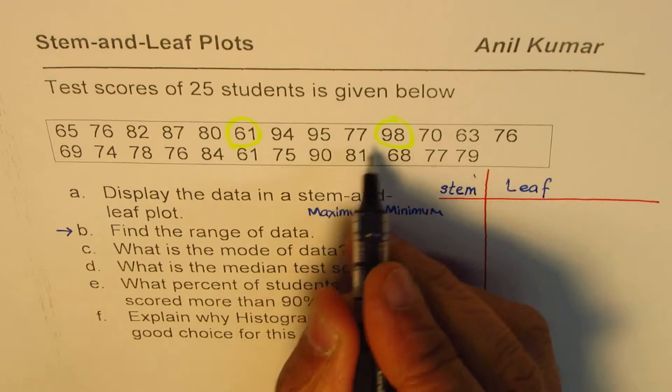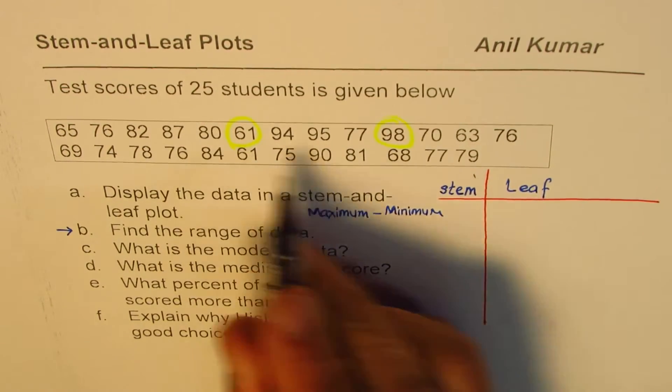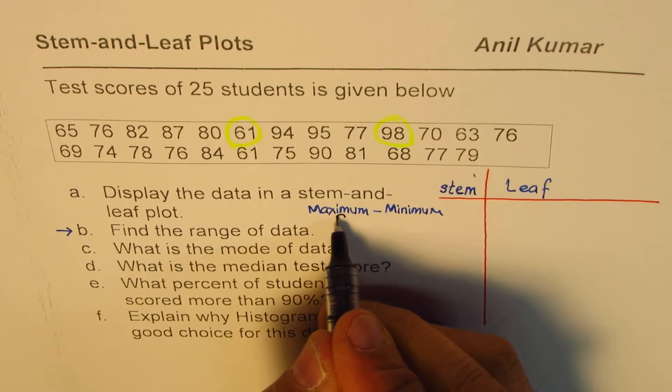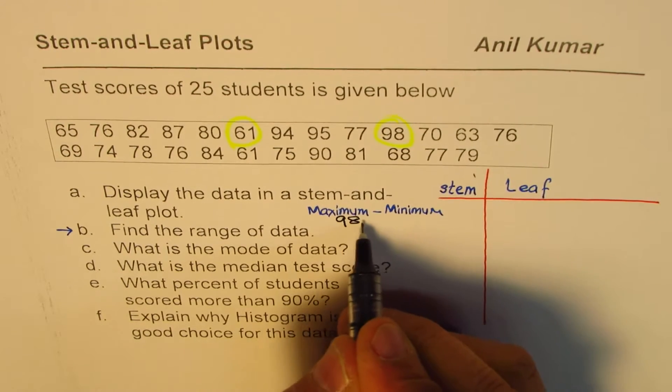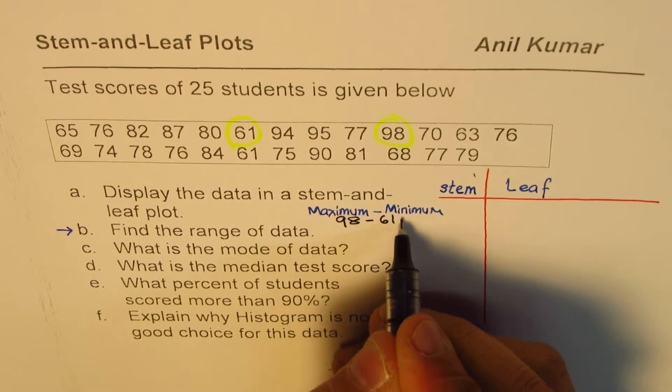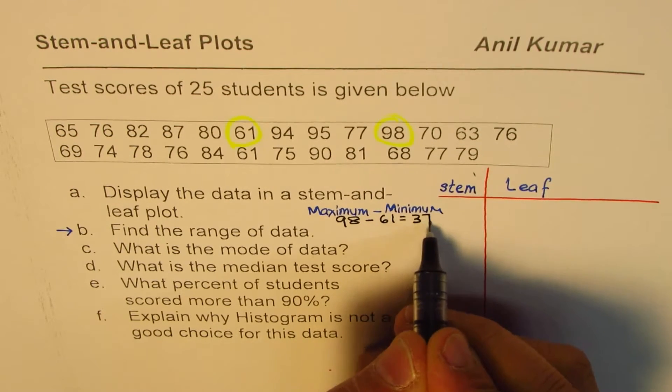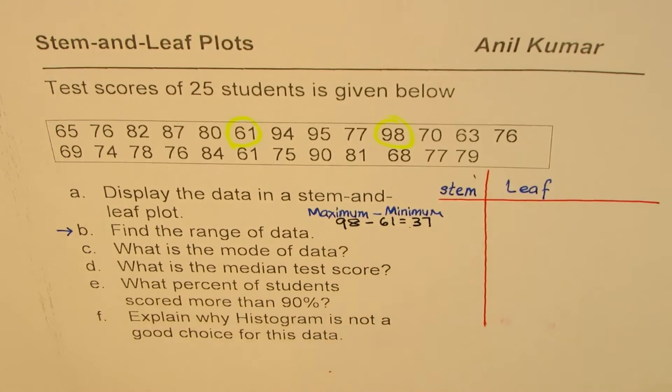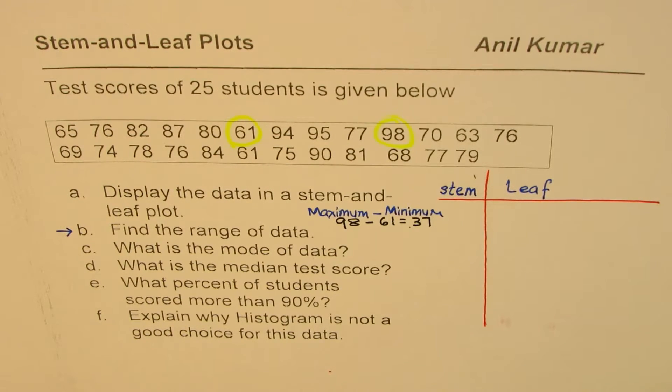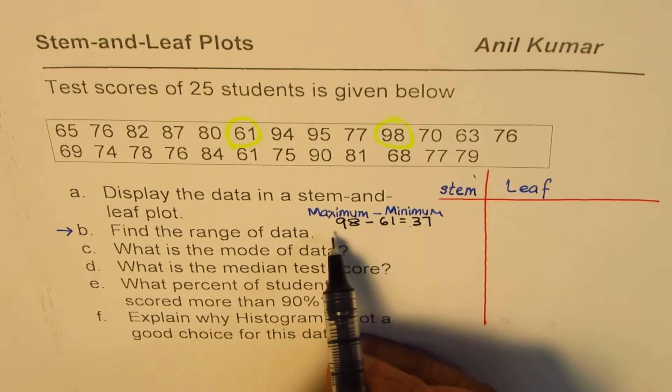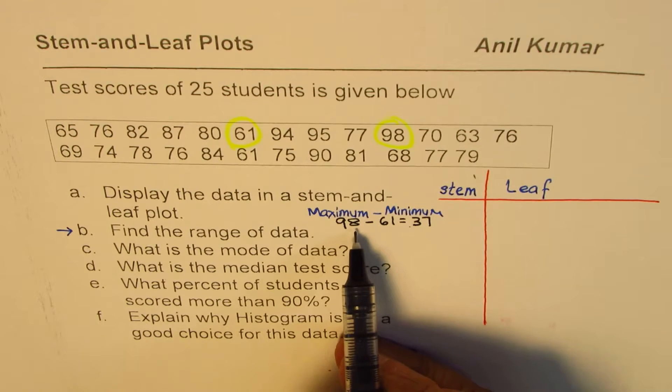And as far as maximum is concerned, in the 90s we have 98. So 98 is maximum and therefore the range of this data is from 61 to 98, and the difference is 98 minus 61, which gives us 37. So the range is 37 for us.